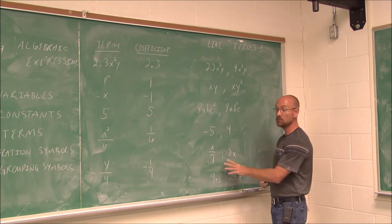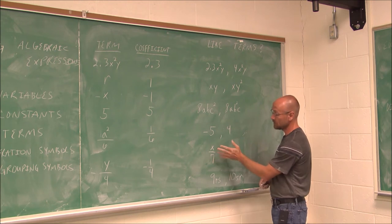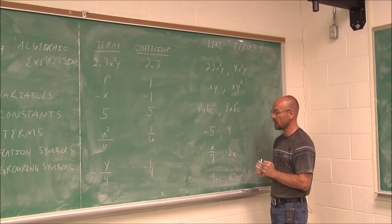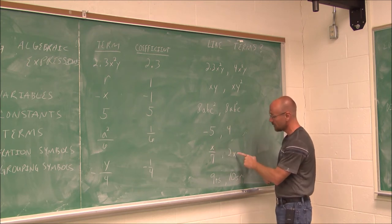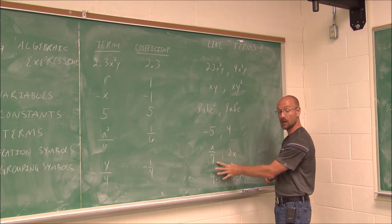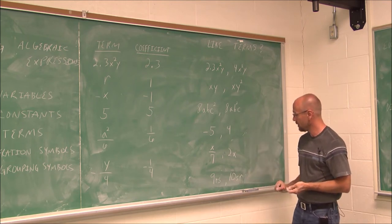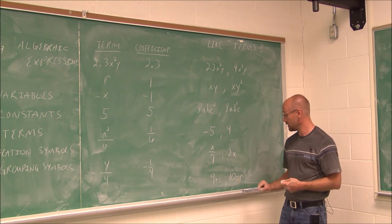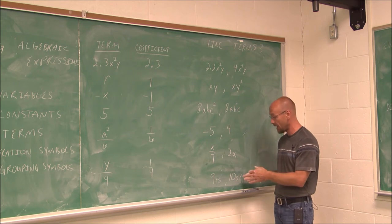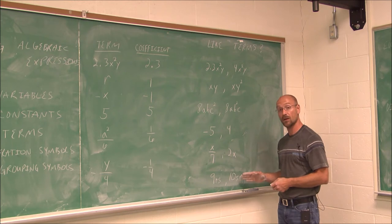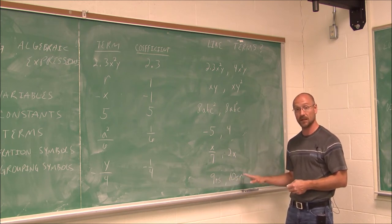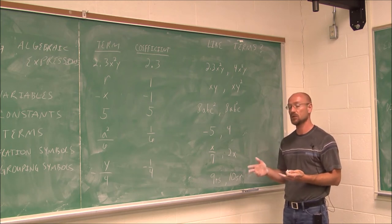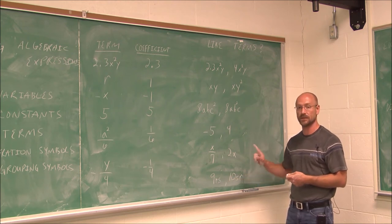Here's where we have to be careful — sometimes we have to go back and identify coefficients. One-seventh x and 2x: the coefficient of the first is one seventh and the second is 2, but the variable is x to the first power in both cases — so even though they may look different, these are like terms. For 9rs and 10sr: both have r and s each to the first power. Just because the order isn't the same doesn't mean they're not like terms — multiplication is commutative, so the order doesn't matter as long as they're the same variables to the same power.